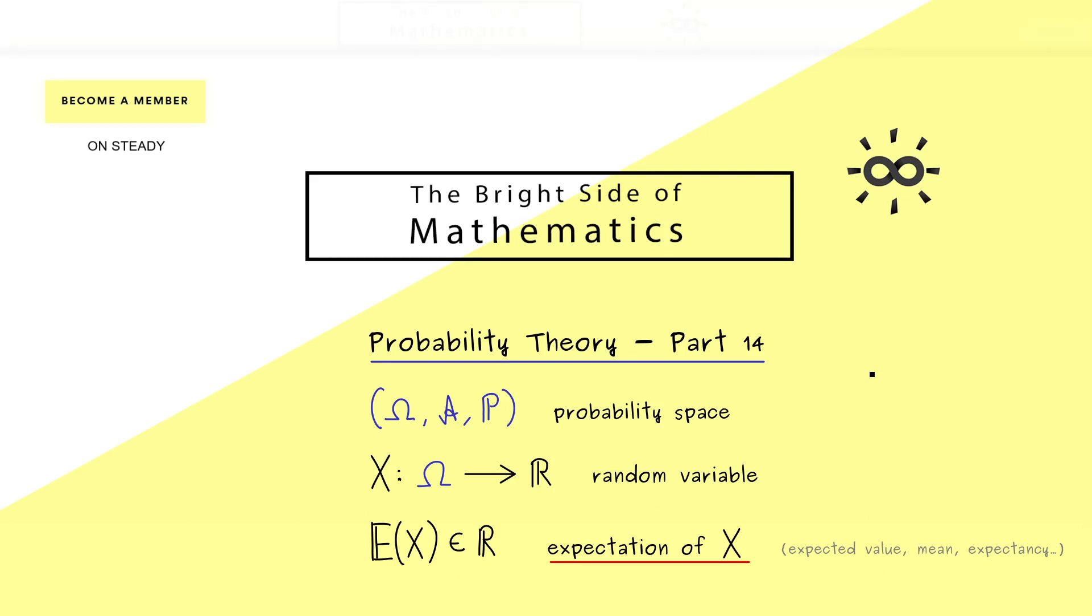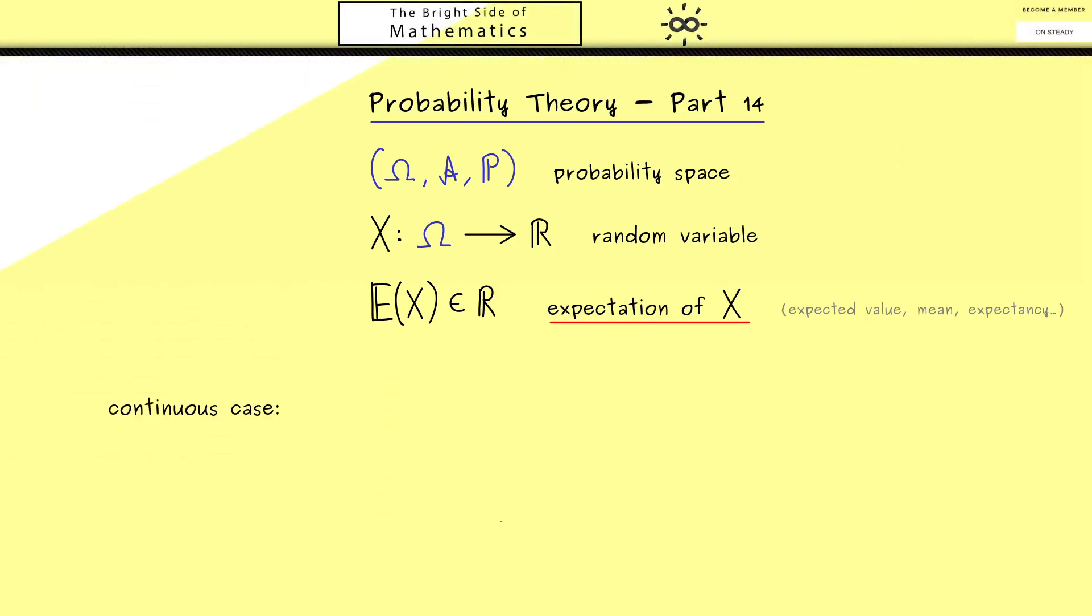Best to see this is in the continuous case, because there we know the random variable X has a probability density function, a PDF. More precisely, it's the PDF of P_X. A probability density function is a non-negative function where the integral is exactly 1. For example, it could be a symmetric function that looks like this, and the integral area here is exactly 1. More important for us is that the expectation lies exactly in the middle here. So the value on the x-axis here is E(X). In such a case, it's very easy to find the value the random variable X is fluctuating around.